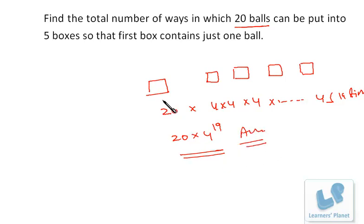I'm sure you are clear. For the first box we have to be clear that it should contain just one ball, so we have 20 choices. Then for the remaining balls, that is 19 balls, each ball has four choices—first ball four choices, second ball four choices, till 19 times, so that will be 4 raised to 19.